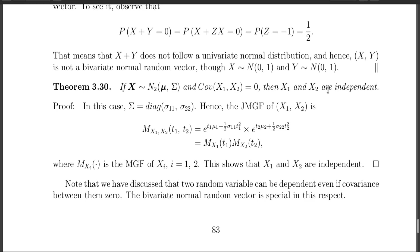As already mentioned, this is a very specific property of the bivariate normal distribution: covariance equals 0 implies X1 and X2 are independent. Again, this is true only for the bivariate normal and not in general.